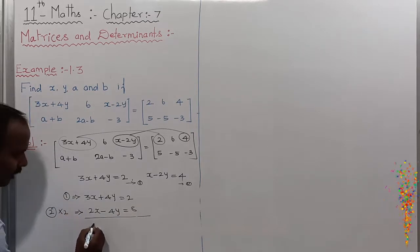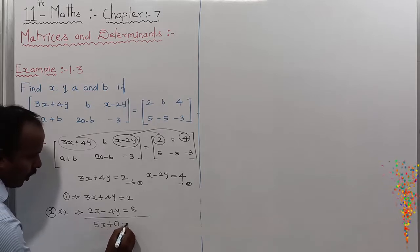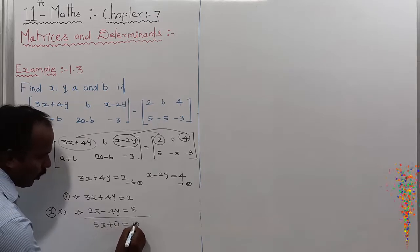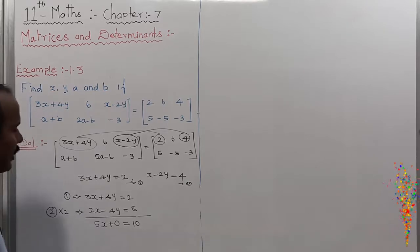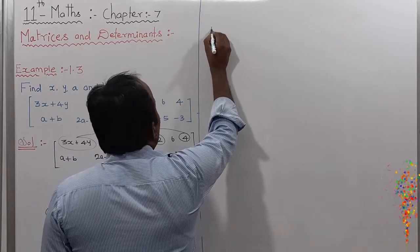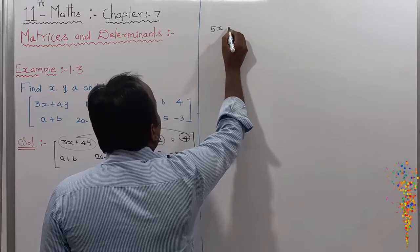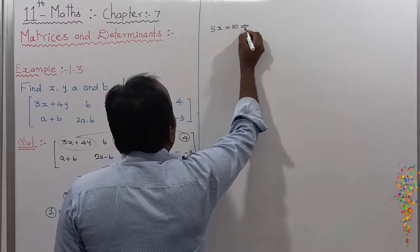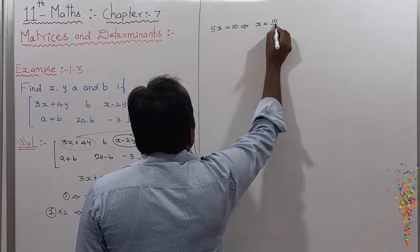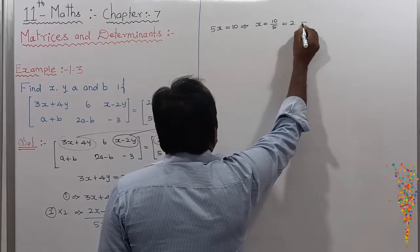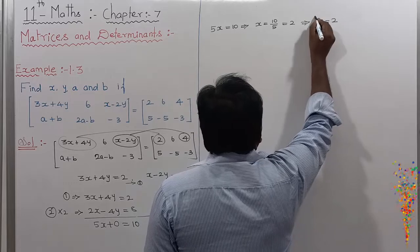We directly add the two equations. This gives 5X, and the Y terms cancel to 0, equal to 10. So 5X equals 10, which implies X equals 10 divided by 5, which equals 2. Therefore X is equal to 2.